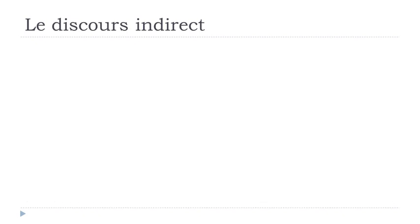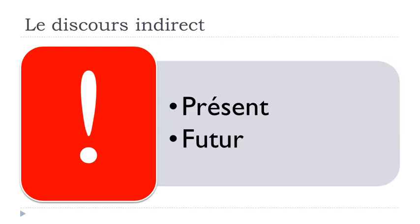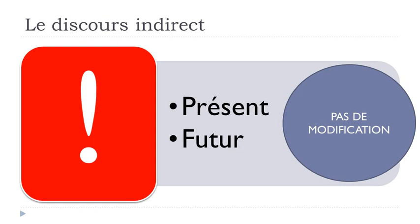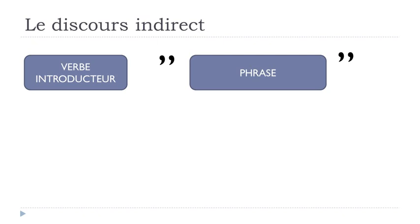The key rule: if the verb introducteur — the verb that introduces the discours indirect structure — is at the present form or the future form, then you don't modify the verb that comes after it. That's the good news. The structure is: verbe introducteur + que + la phrase (the sentence).